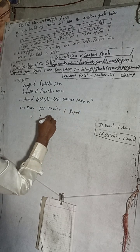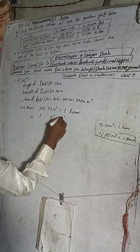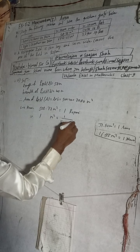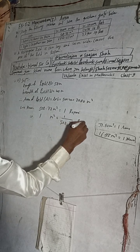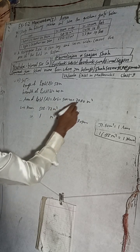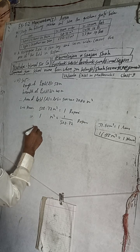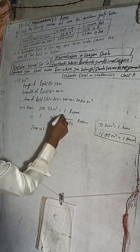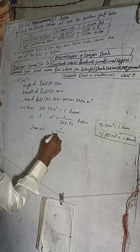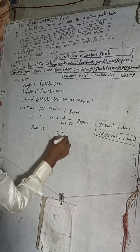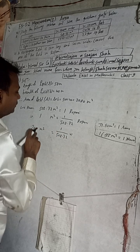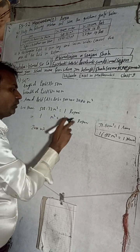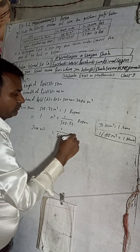One square meter is equal to one divided by 508.72 ropni. So to convert 2000 square meters, we multiply — 2000 divided by 508.72.